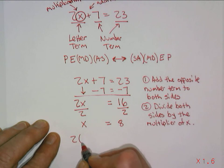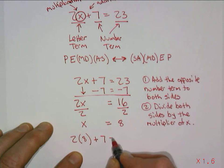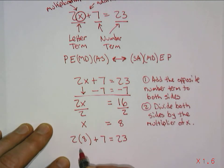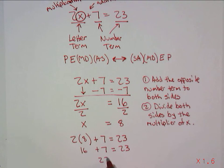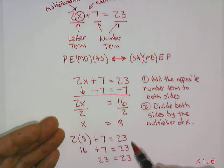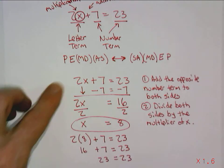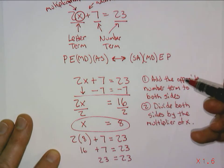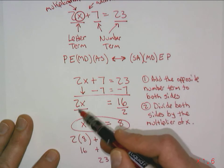And we could actually check that by putting the 8 in. 2 times 8 plus 7 should equal 23, which means 2 times 8 is 16 plus 7 equals 23. And that is true, that 23 is equal to 23. And that's what equal means, is what's on the left side is equal to what's on the right side. And so the object was to find this value for x that makes this true. And it takes really two steps, adding the opposite and then dividing by the multiplier of x.